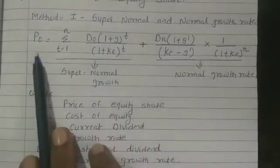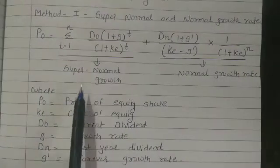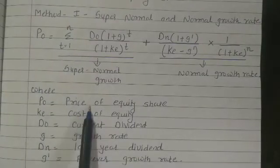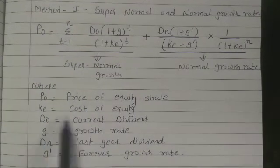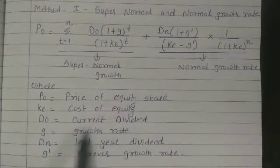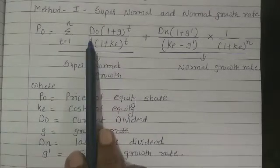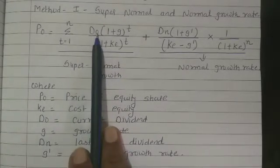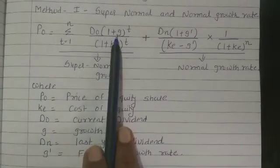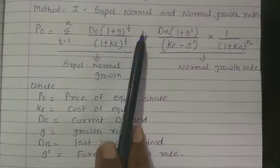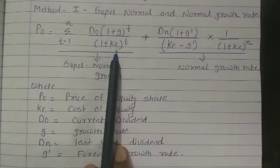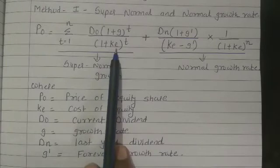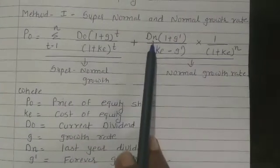Here P0 is the price of the equity share. KE is the cost of equity. D0 is the current dividend. G is the growth rate up to the time period. Discount it at 1 plus KE, where KE is cost of equity. Dn is the last rate dividend — whatever dividend grows up to, say, 6 years.